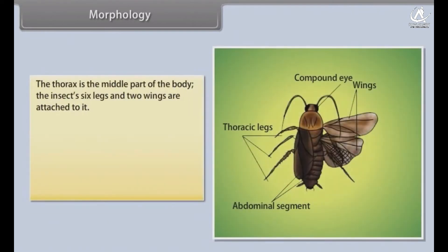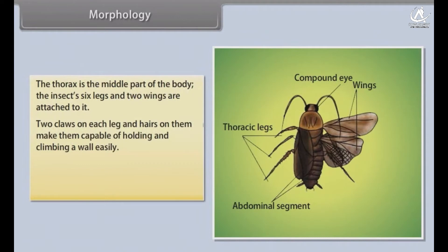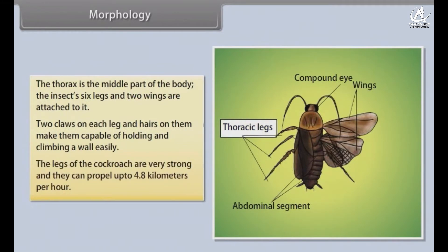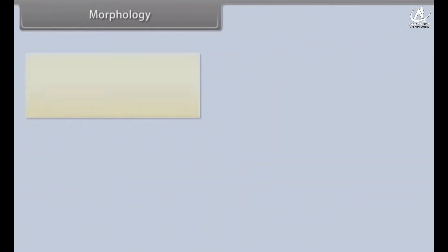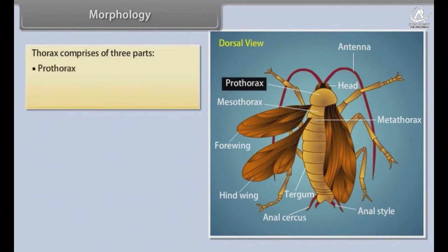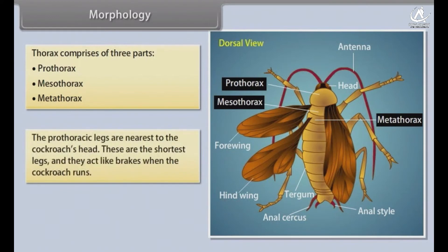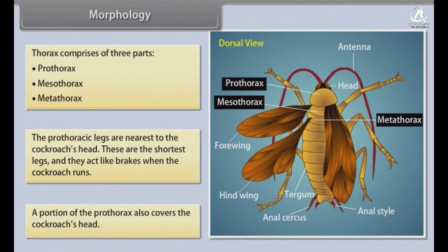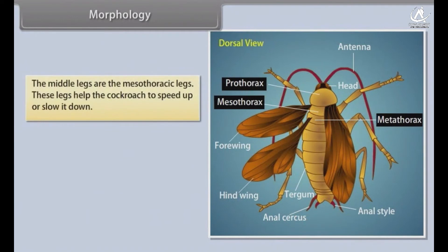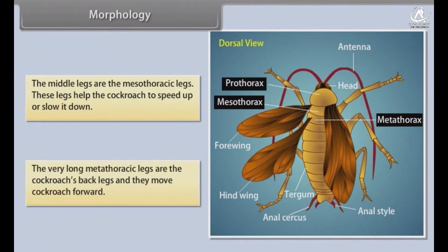Morphology. The thorax is the middle part of the body. The insect's six legs and two wings are attached to it. Two claws on each leg and hairs on them make the cockroach capable of holding and climbing a wall easily. The legs are very strong and can propel the cockroach up to 4.8 km per hour. The thorax comprises three parts: prothorax, mesothorax and metathorax. The prothoracic legs are nearest to the head and act like brakes when the cockroach runs. The mesothoracic legs help speed up or slow down, while the very long metathoracic legs move the cockroach forward.